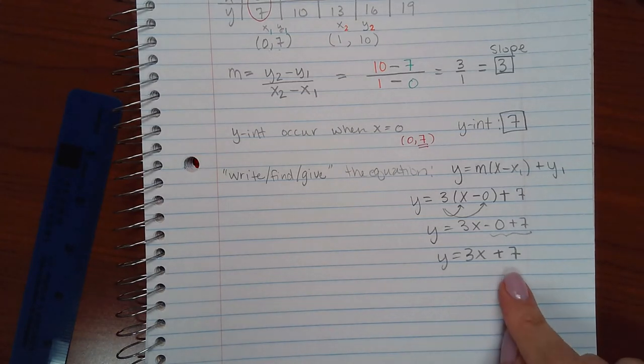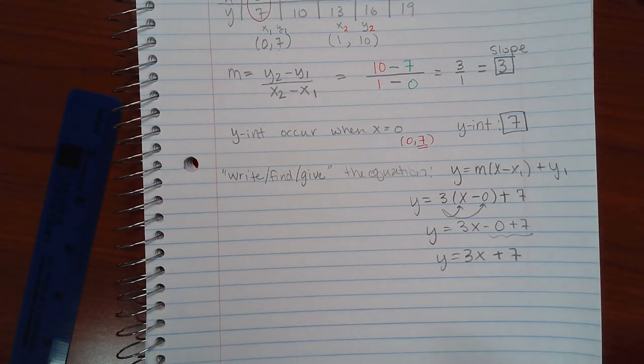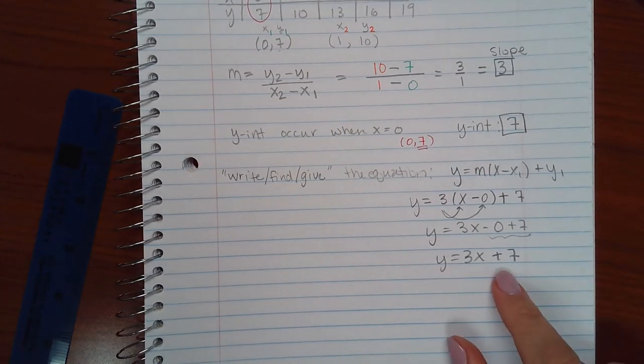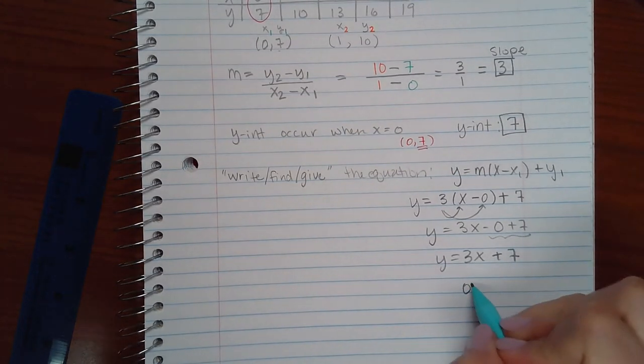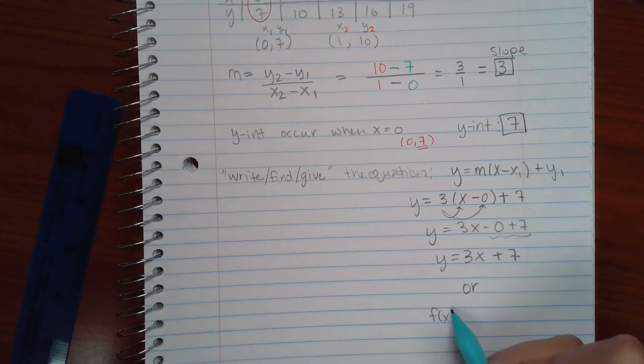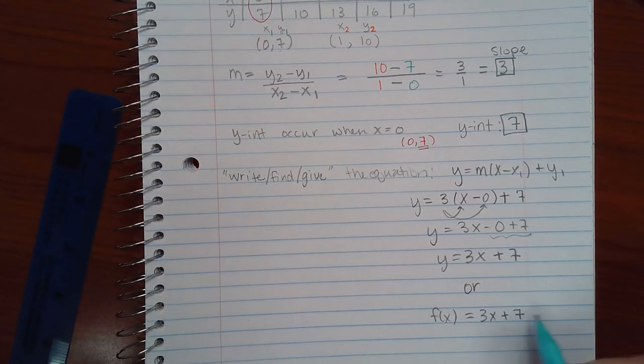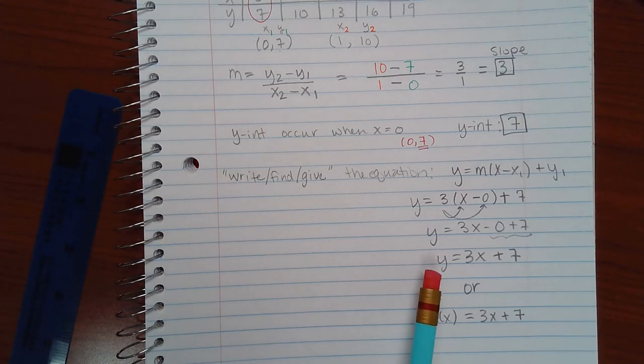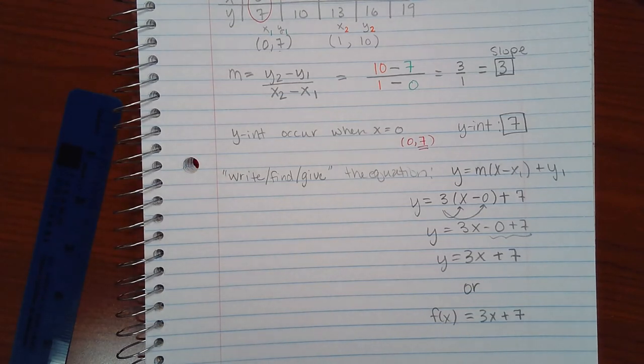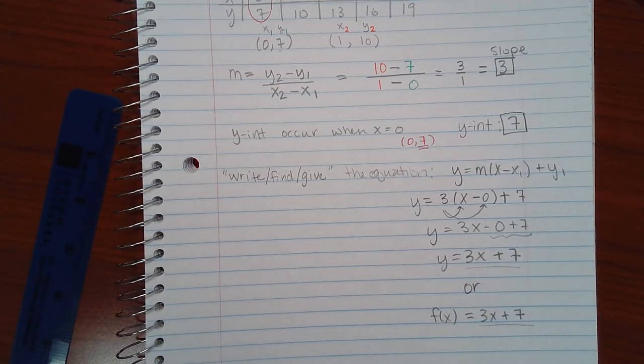Now, depending on the computer, I didn't take a look at that, but it could want the equation like this, or it could ask for the equation like this. Both of these are correct, just pay attention to what they want, whether they want y equals, or they want the notation f of x equals. But both of them are still going to have the same thing on the right-hand side of the equation.